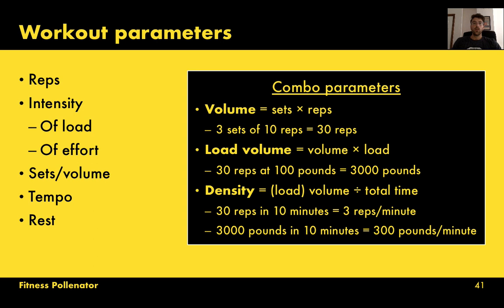Now that we've selected, ordered, and paired exercises, we need to determine the workout parameters — sets, reps, load, and intensity. When you combine some of these parameters, you get combo parameters: sets multiplied by reps equals volume; volume multiplied by load equals load volume; and load volume divided by total time gives you density. For example, three sets of ten reps is 30 reps of volume. At 100 pounds each that's 3,000 pounds of load volume. And 30 reps in 10 minutes is three reps per minute density.